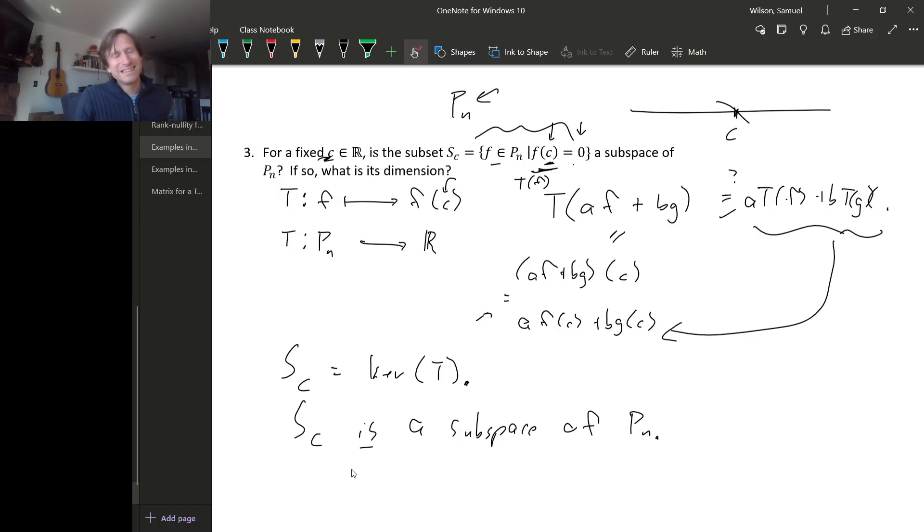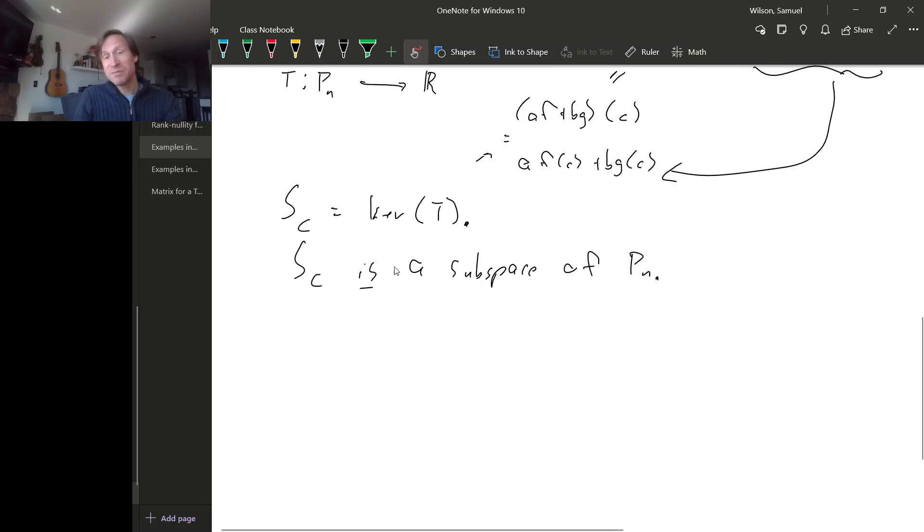What is the dimension of this subspace? That's kind of a tricky question. In general, to find the dimension of this subspace by hand, we'd have to find a basis for this subspace, and it's not totally clear how to do that. But another way to find the dimension of this subspace, this subspace is the kernel of a linear transformation. We could use the rank nullity relationship for this linear transformation. We know that the dimension of the kernel of T plus the dimension of the image of T is the dimension of the domain space, and the domain space is P sub N.